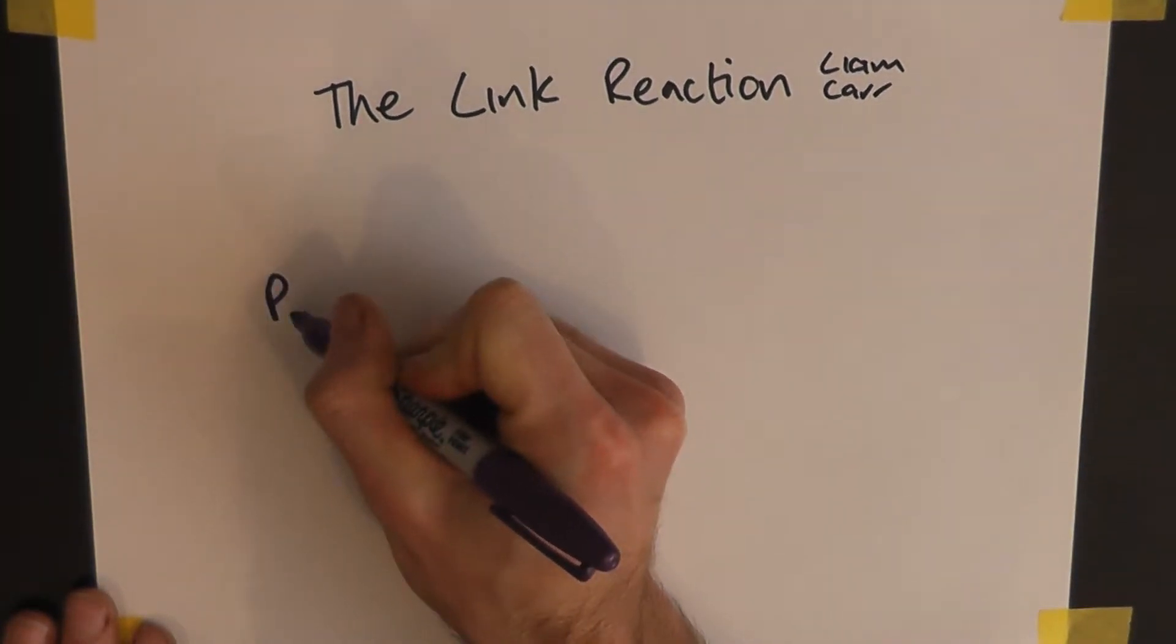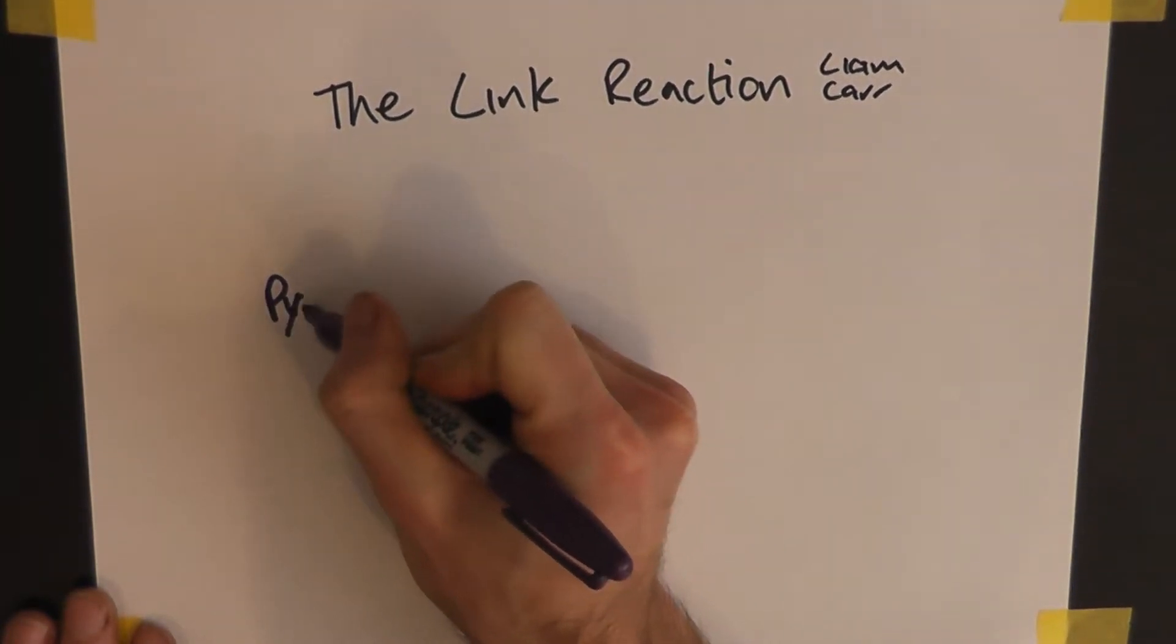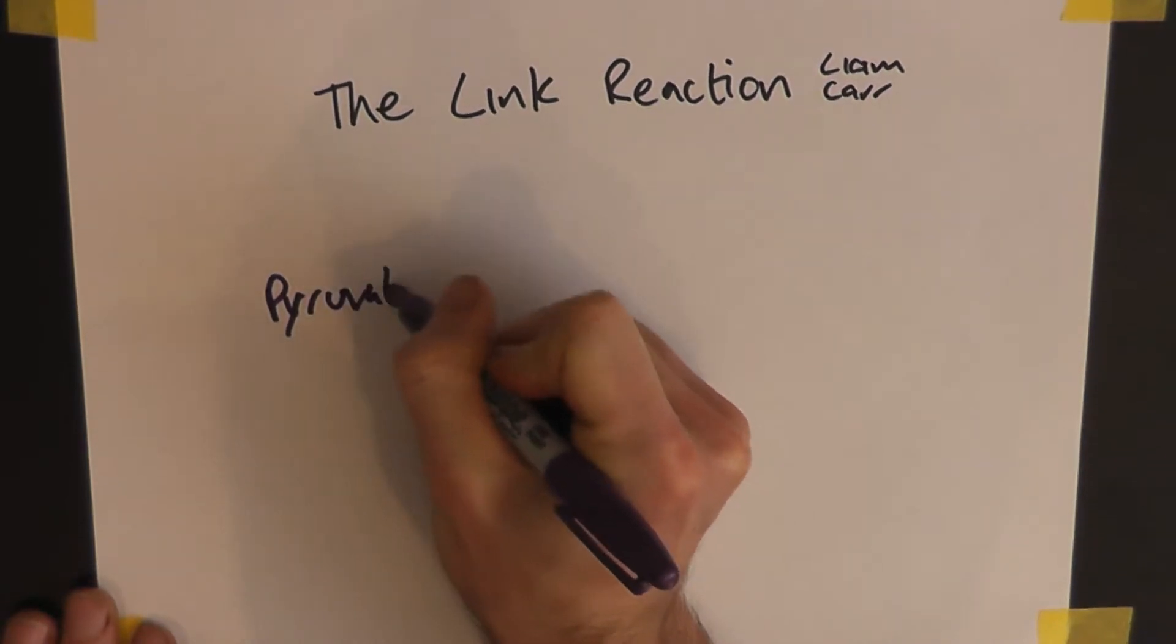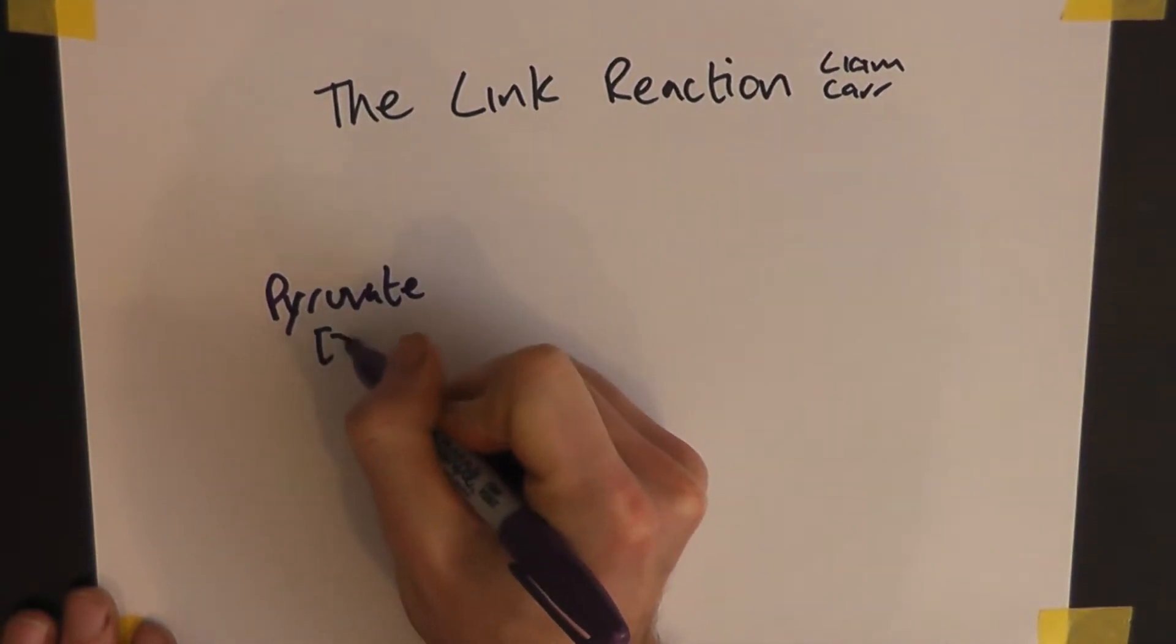And we start off with a product of the Krebs cycle, that's pyruvate, which is a 3-carbon molecule.